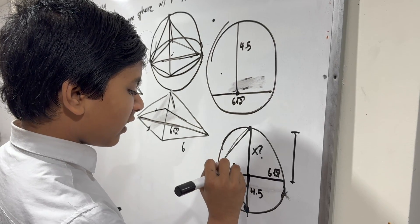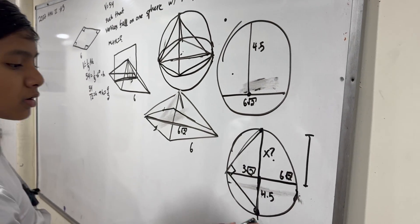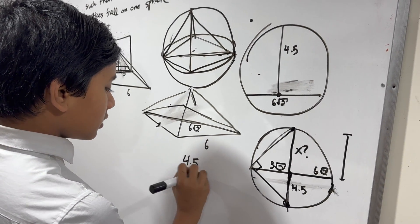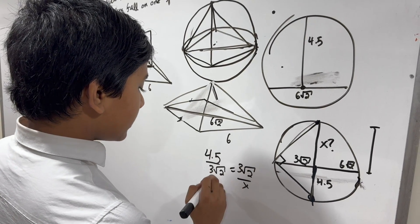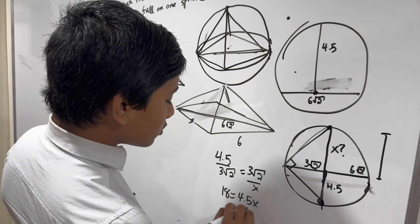So this is a right triangle, and furthermore we can say it's similar to this right triangle which has side lengths 4.5 and 3√2. So here, 4.5 is to 3√2 as 3√2 is to x.